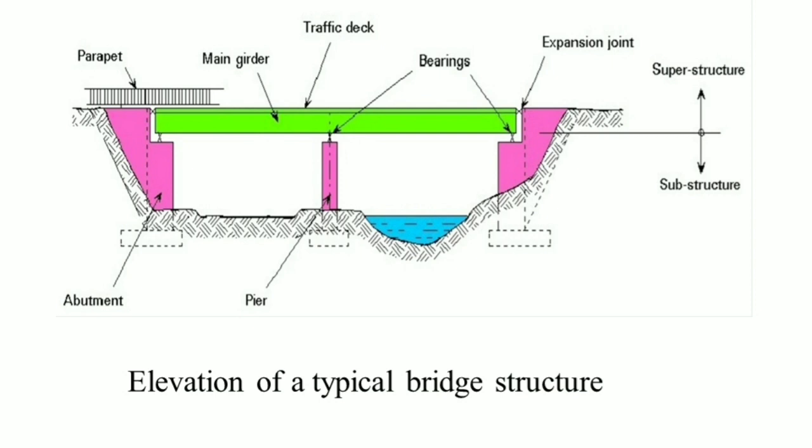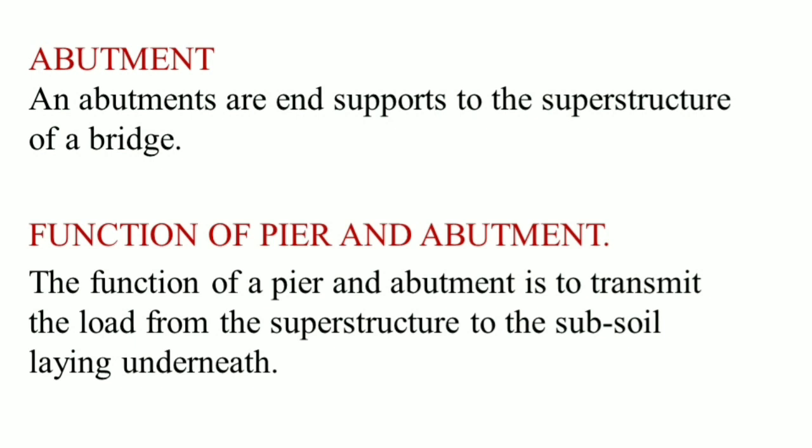In this figure, we can see a typical bridge structure elevation. The above portion of the bridge is called the superstructure and the below portion is called the substructure. The superstructure includes bridge decks, and the substructure includes abutments and piers. The first support and the last support are called abutments, and the middle one is the pier.